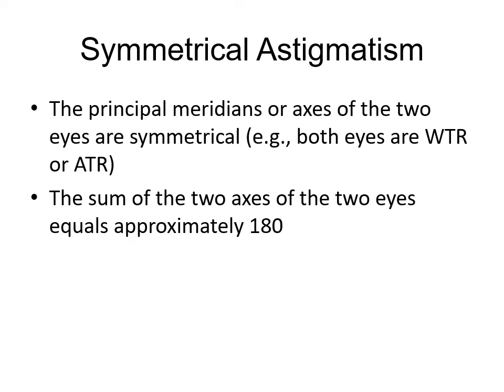Symmetrical astigmatism refers to both eyes: the principal meridians or axes of the two eyes are symmetrical, and the sum of the two axes of the two eyes equals approximately 180°. For example, if one eye has astigmatism at 80° and the other at 100°, their sum is 180° — that is symmetrical astigmatism. Up until now we have seen astigmatism in one eye; symmetrical and asymmetrical astigmatism consider both eyes.